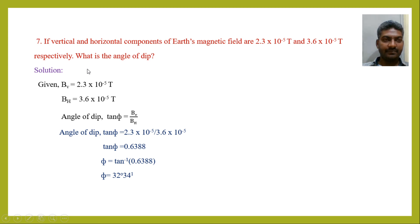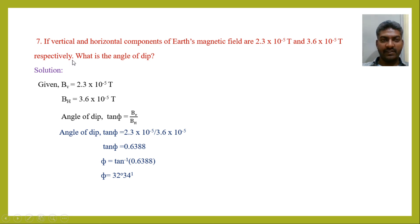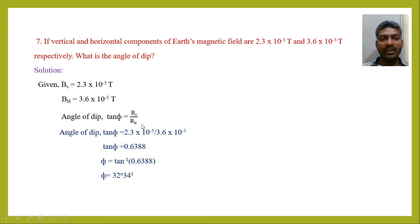The next problem: if the vertical and horizontal components of Earth's magnetic field are 2.3 × 10⁻⁵ T and 3.6 × 10⁻⁵ T respectively, find the angle of dip. The angle of dip δ is given by tan(δ) = Bv/Bh. Substituting the values gives 0.6388, so δ = tan⁻¹(0.6388) = 32° 34'.